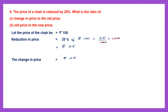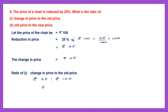For the first ratio — change in price to old price — that is 25 is to 100. Writing it as a fraction: 25 by 100. We divide both by 25 to reduce to lowest terms: 25 ones are 25 and 25 fours are 100, giving us 1 by 4. So the ratio of change in price to old price is 1 is to 4.